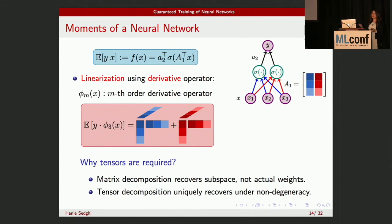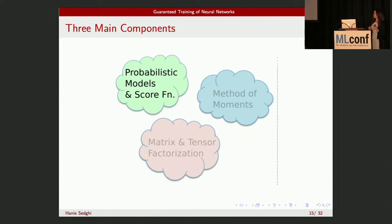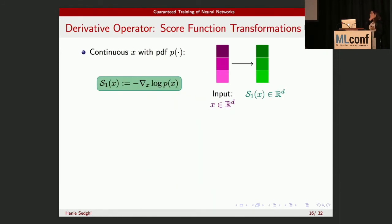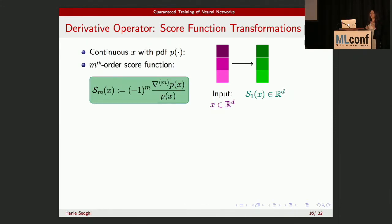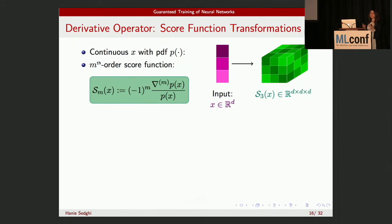Now that we know we need that derivative operator, the next question is: what is the magical function of the input that gives us that derivative operator? This leads to the third important component: probabilistic models. For a continuous input x with probability distribution function p(x), the score function is defined as the derivative of the logarithm of the PDF, and has nice characteristics. For a vector input, the score function is also a vector. We extended this to a higher-order definition: the m-th order score function is the normalized m-th order derivative of the PDF. So the second-order score function is a matrix, the third-order is a third-order tensor, and so on.